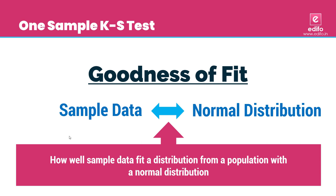Goodness of fit is a prime check that the researcher needs to accomplish. It refers to measuring how well the observed data correspond to the fitted model — that is our assumed model. The goodness of fit test is a statistical hypothesis test to see how well the sample data fit a distribution from a population with a normal distribution.